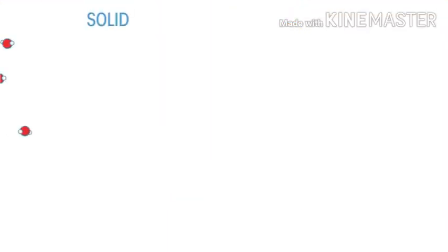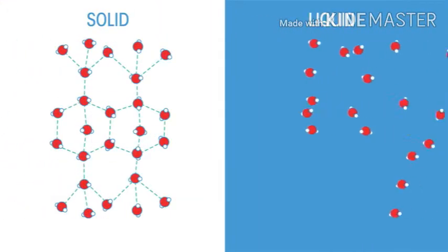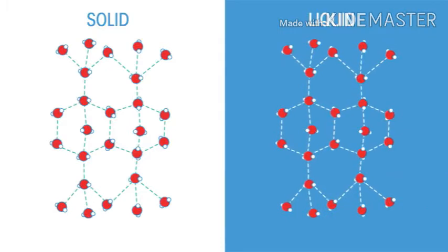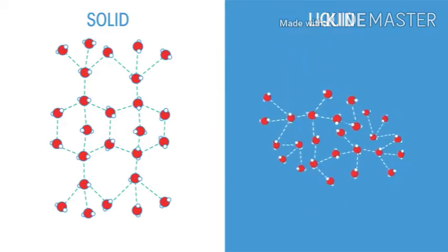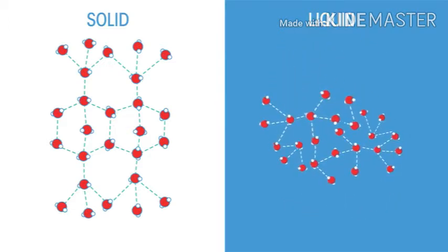When a material is heated, it absorbs heat energy. This additional energy can cause attractive forces between molecules to break. This leads to rearrangements of the particles because the attractive forces no longer hold them together as tightly.